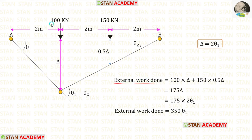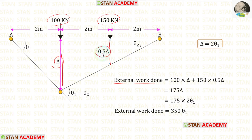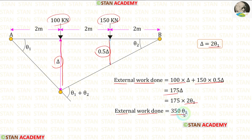For the external work done, we multiply the load 100 kN with height delta, and multiply the load 150 kN with height 0.5 delta, then add them. After adding, we get 175 delta. Substituting delta as 2 theta 1, we get the external work done equal to 350 theta 1.